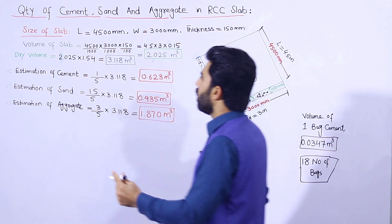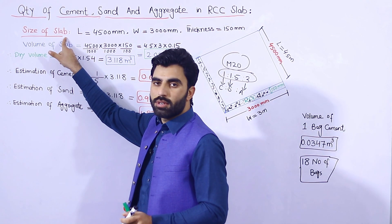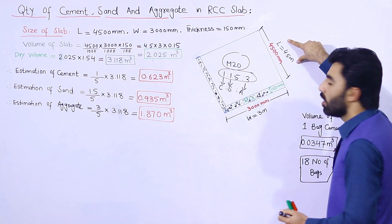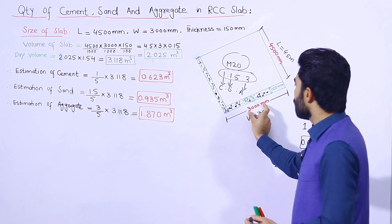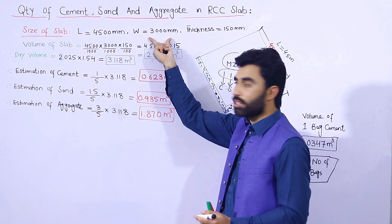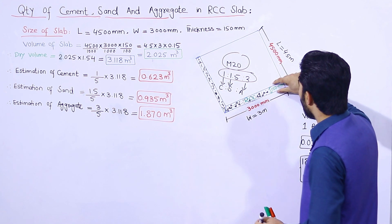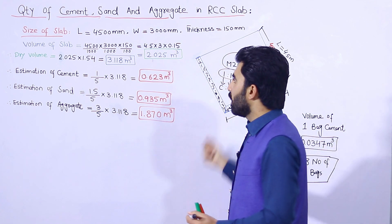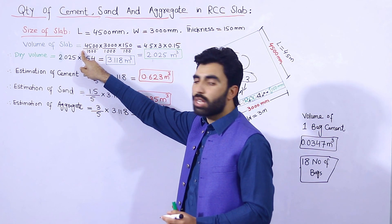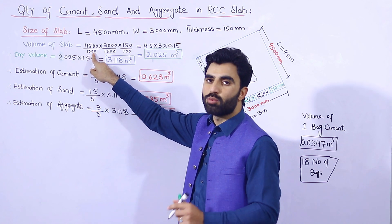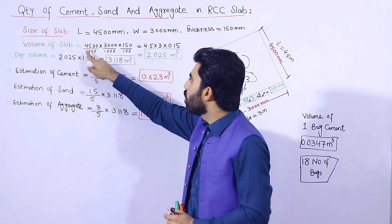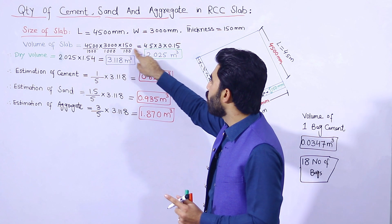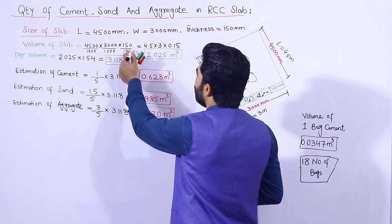The size of the slab: length is 4500 mm (or 4.5 meters), width is 3000 mm, and the thickness of the slab is 150 mm, since this is an RCC slab. Now let me convert to meters: length is 4500 divided by 1000 = 4.5 m, width is 3000 divided by 1000 = 3 m, and thickness is 150 divided by 1000 = 0.15 m.